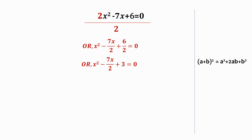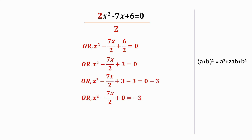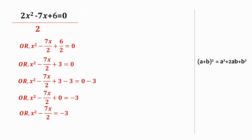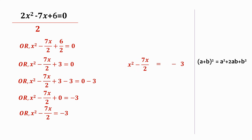Now for the next step, we have to get the constant term to the right hand side of the equation. So we subtract 3 from both sides of the equation, and we get x² - 7/2 x = -3. A term can be sent to another side of the equation by putting a negative sign to it. Here the term 3 is positive, so we simply make it negative 3 when taking it to the other side.